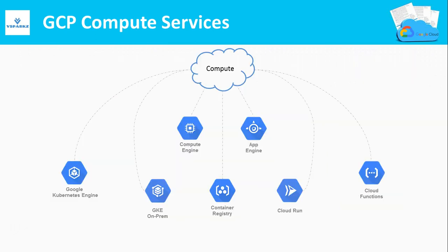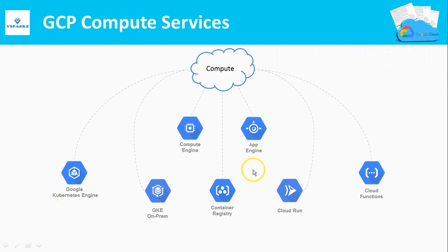Now let us explore the services of GCP. The first service is Compute Service. Under Compute Service, you have Compute Engine, which gives you virtual machines in the cloud that you can simply deploy and access. App Engine gives you the provision to run your applications without any underlying infrastructure — no need for physical machines, you can simply deploy your code and run it. Google Kubernetes Engine, GKE OnPrem, Container Registry, and Cloud Run are predominantly for running containers. Cloud Functions are event-based trigger functions that run code automatically when triggered by cloud-based events.